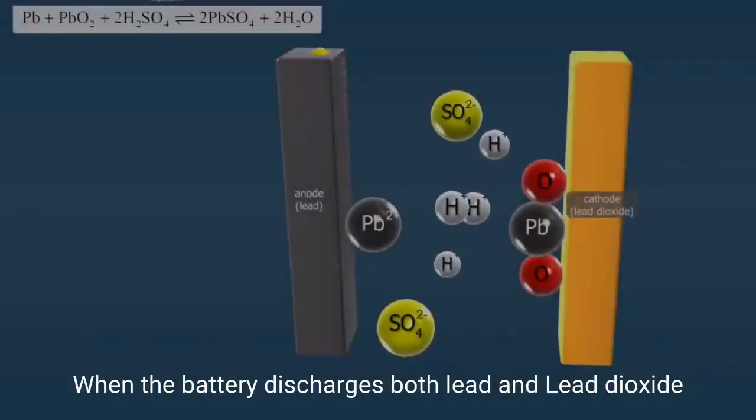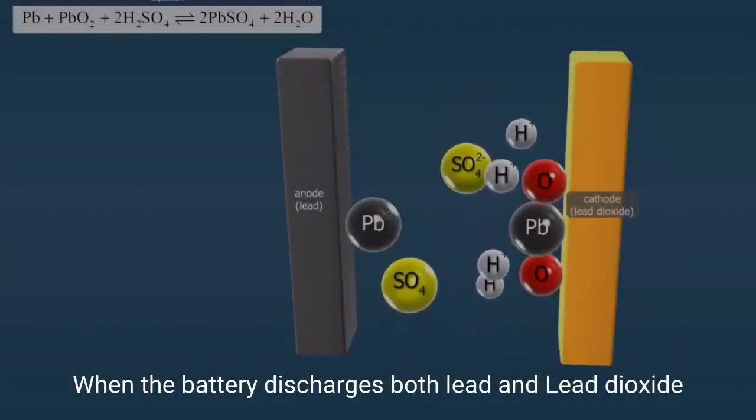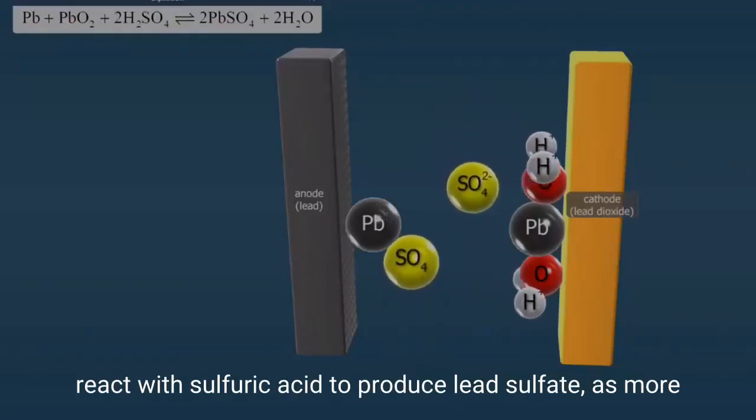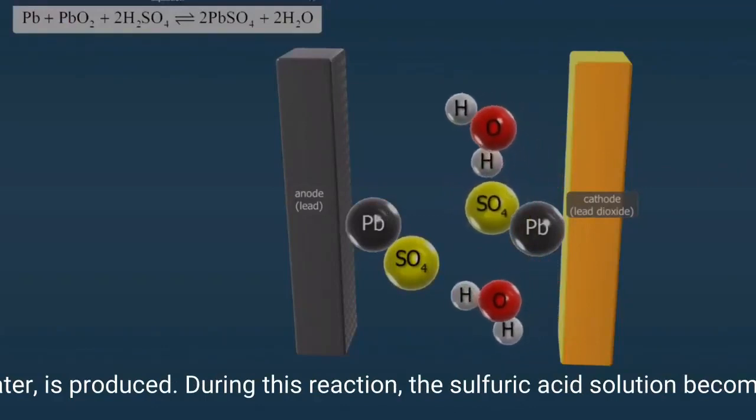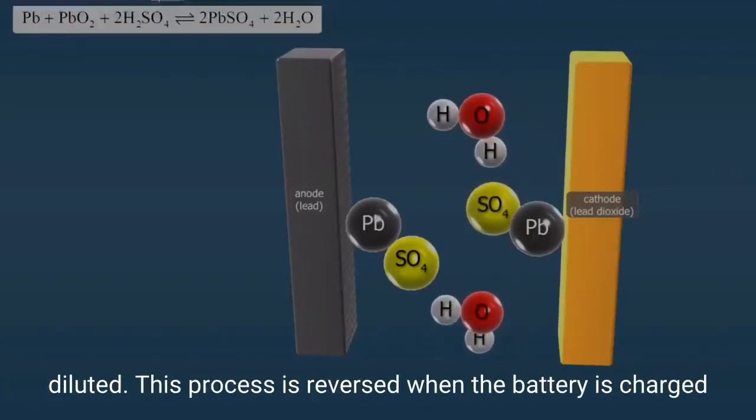When the battery discharges, both lead and lead dioxide react with sulfuric acid to produce lead sulfate. As more water is produced during this reaction, the sulfuric acid solution becomes diluted. This process is reversed when the battery is charged.